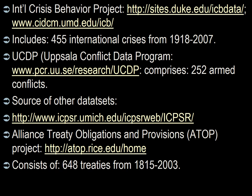There are a variety of other datasets, including the ICBP from McGill University — the International Crisis Behavior Project, set up by Michael Brecher — the Uppsala Conflict Data Program, ICPSR, and treaty obligations data. There's a lot of data out there. You should know the different types casually. But the Correlates of War and Polity 4 are going to be the datasets you'll most frequently use.